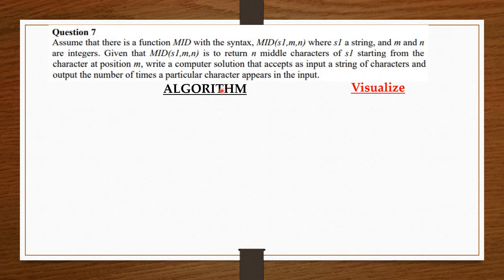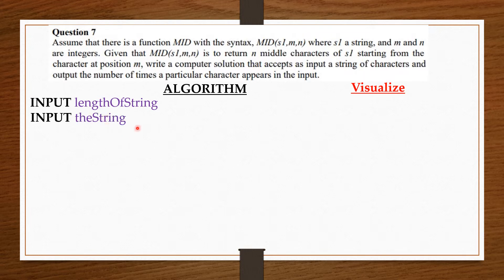So, to the algorithm: we'll ask the user to input the length of the word or the length of the string — input length of string. Then, we ask the user to input the string itself. Then, we want to know from the user the particular character he or she wants to find the number of times it appears in the string — input the character.